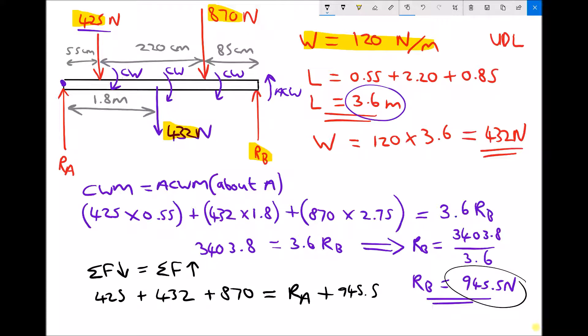If we simplify our left-hand side, we get 425 plus 432 plus 870, which is 1727. So 1727 equals RA plus 945.5. Now the final step then, to get RA on its own, the operation we need to do is subtract 945.5 from each side.